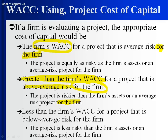What if the firm is doing a project that's safer than average — below average risk for the firm? The firm has a bunch of projects; the average level of risk is reflected in its weighted average cost of capital. This project happens to be safer, less risky than that average. Therefore, the cost of capital would be less than the firm's weighted average cost of capital.